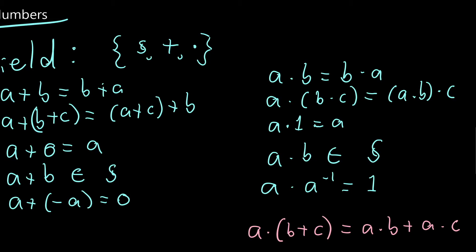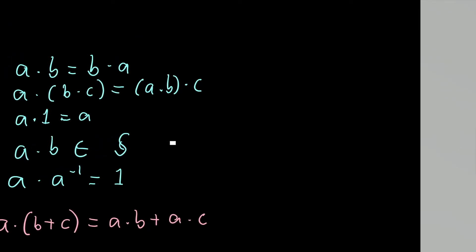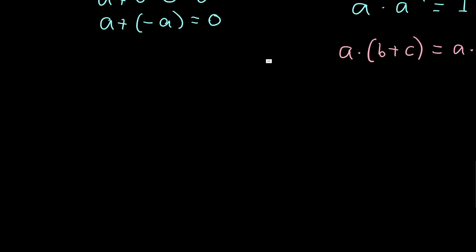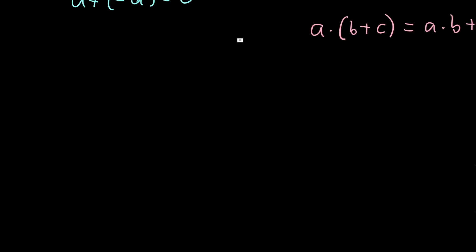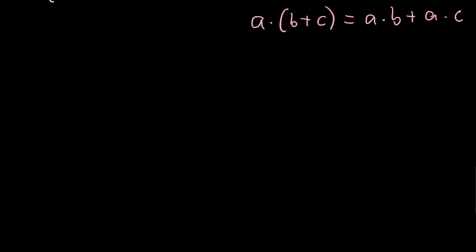So we've now got a way of treating and combining numbers in some sort of way, but we want a further notion of order. Order is what you'd expect it to be — it's an idea of less than or equal to, greater than or equal to, less than, greater than, or any of those sort of inequality properties. And again, it behaves the way you'd expect. So a is less than or equal to a.